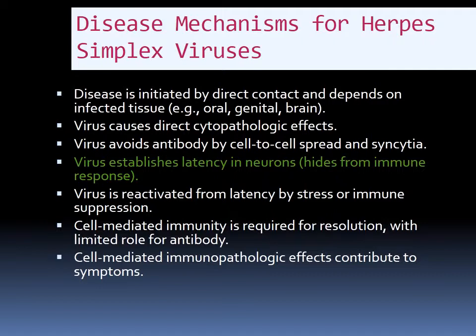Viruses avoid antibody because they spread by cell-to-cell contact. If the virus goes into the cell, it is hidden from antibody. This virus then goes to the adjacent cell and would never come to the serum or blood to be exposed to antibody. Because viruses have to go to blood or serum to find an antibody, since antibodies are soluble proteins. This means the virus is protected from antibody because it goes from cell to cell. That is an important concept.